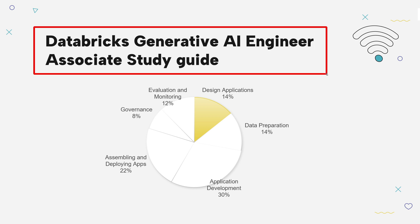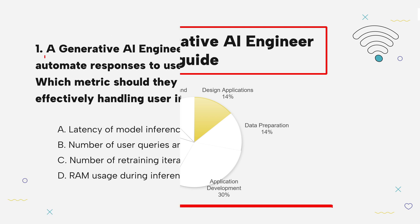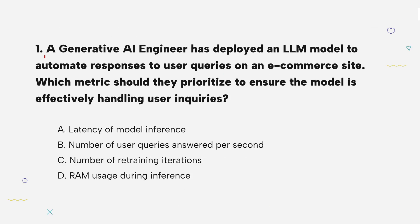Study Guide. Question 1: A generative AI engineer has deployed an LLM model to automate responses to user queries on an e-commerce site. Which metric should they prioritize to ensure the model is effectively handling user inquiries?